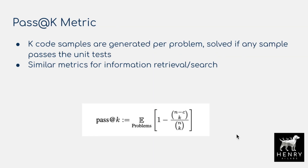That brings us to the pass@K metric — similar to information retrieval where you measure how many documents you need to retrieve to find the ground truth. How many K code samples do you need to generate to solve the problem? They use an n-choose-k strategy for accounting for the variance of this metric.